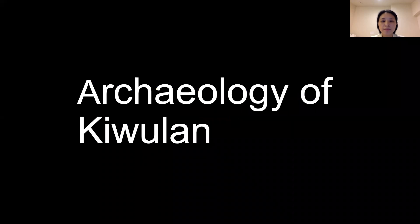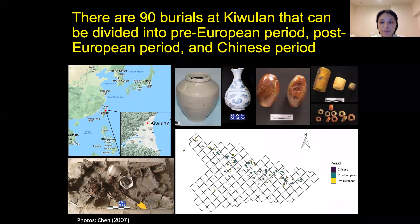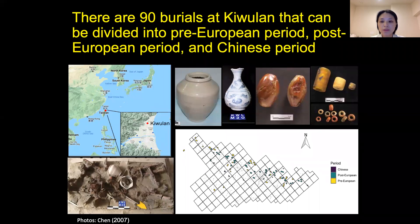I will answer this question by looking at burial data from Yilan. In the northern part of the Yilan plain, there are 90 burials in total that can be divided into three major temporal phases: the pre-European, post-European, and Chinese periods. In the burials, imported items such as porcelain, stoneware, and different kinds of beads were used as burial goods. According to historical records, trade items were also treated as prestige goods in local indigenous culture.